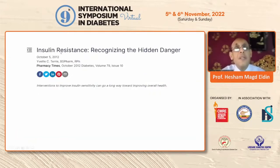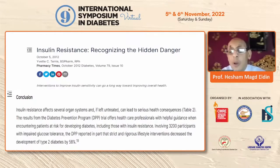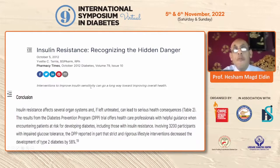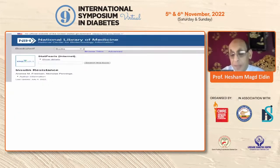In 2012, insulin resistance was recognized as a hidden danger because if untreated it can lead to serious health consequences, including cardiovascular disease and others. They stated that interventions to improve insulin sensitivity can go a long way toward improving overall health. So if we can improve insulin resistance, we take a good step in improving the overall health of the subject.